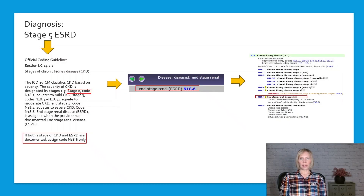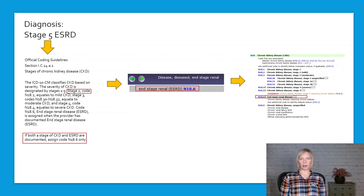Next, we have a diagnosis of Stage 5 end-stage renal disease. Remember, the guideline tells us that if both a stage of CKD and end-stage renal disease are documented, assign code N18.6 only. So when we look up our code in the alphabetic index, we go straight to end-stage renal disease and know that we only need to assign one code for this diagnosis: N18.6, end-stage renal disease.